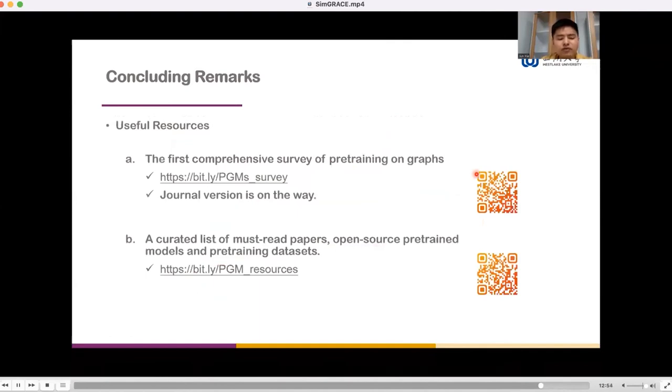We provide some useful resources here. In addition to the survey we mentioned just now, we also released a list of must-read papers, open-source pre-trained models, and pre-training datasets in the QR code. If you find other resources that are useful, feel free to let me know via GitHub issues or via email. We will update this resource and papers on a regular basis to maintain updates.